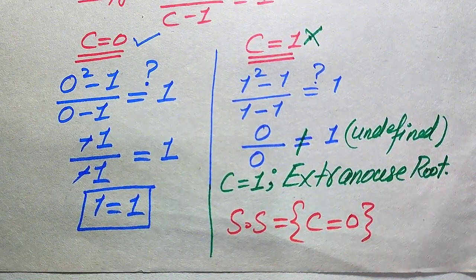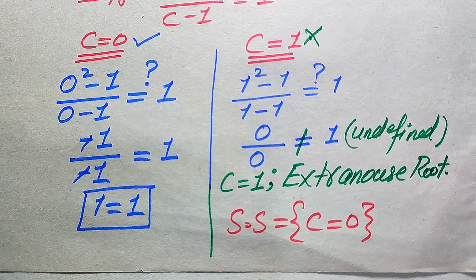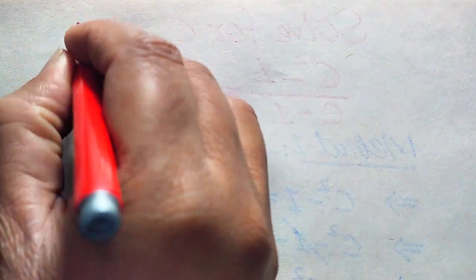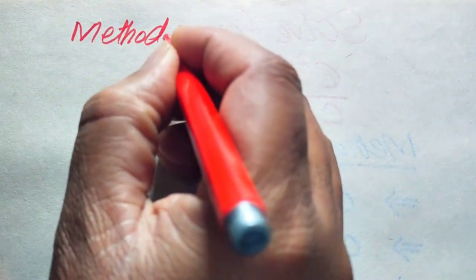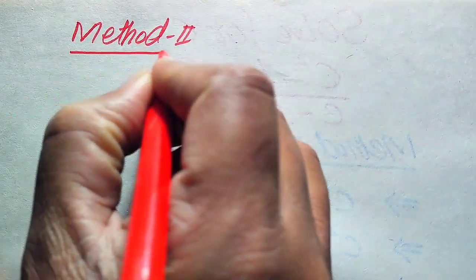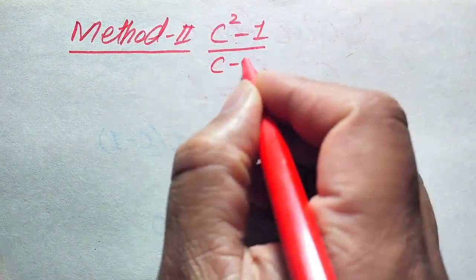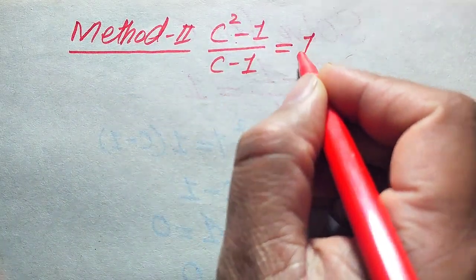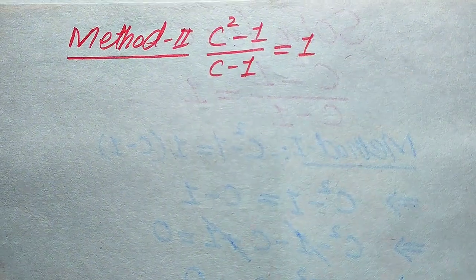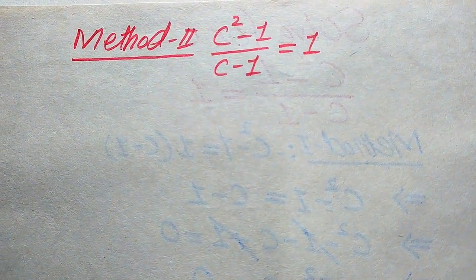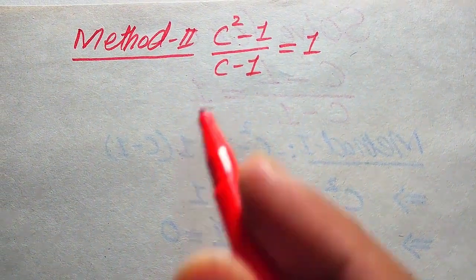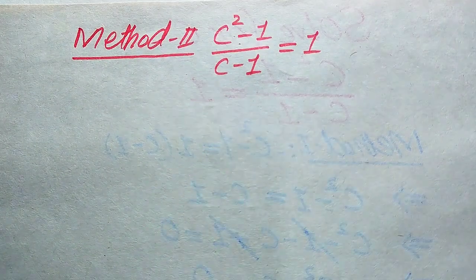So the only valid solution from Method 1 is c = 0, giving the solution set {c = 0}. Now we solve the same problem using Method 2. We copy down the given equation: (c² - 1) / (c - 1) = 1. Method 2 is a very straightforward approach.